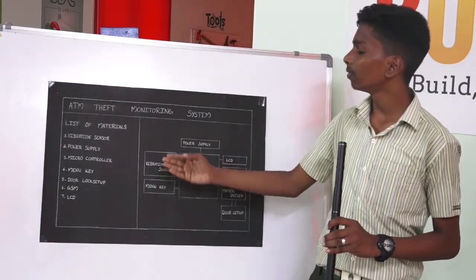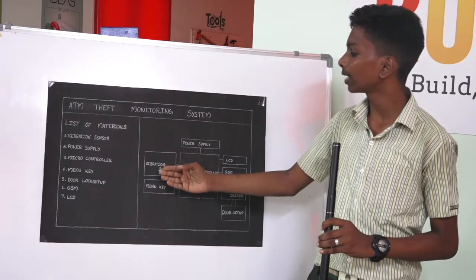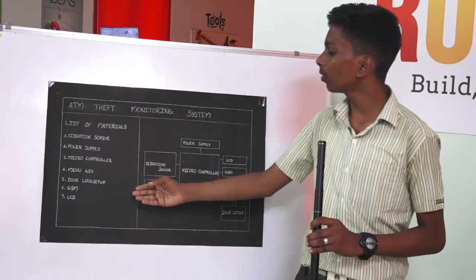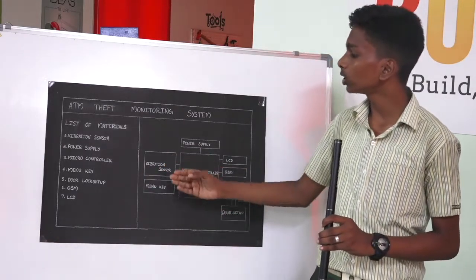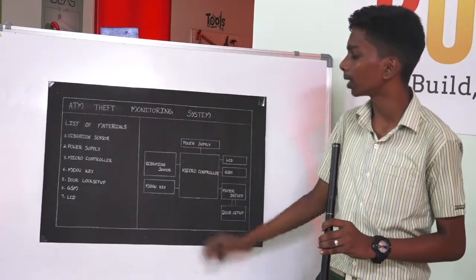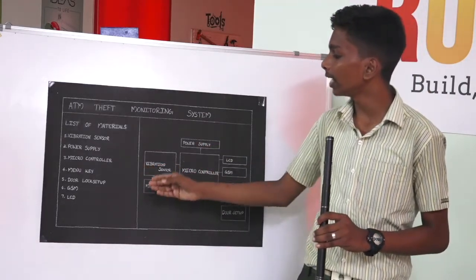Menu-key is used to enter the passcode. Relay is a switch which controls the circuit electromechanically. GSM, Global System for Mobile Communication, is used to send short text messages to one or more at the same time. LCD is used here as ATM display.